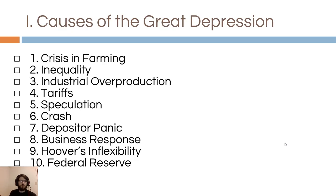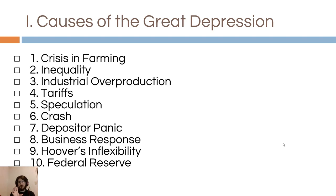The main causes of the Great Depression in Canada included a crisis in farming, inequality, industrial overproduction, tariffs that Canada put up as a result of the Great Depression following what the United States did, speculation beforehand, the stock market crash — which wasn't a direct cause but was connected — depositors panicking afterwards, businesses shutting down or holding back funds or firing workers, and in the United States, Hoover being inflexible and the Federal Reserve mismanaging monetary policy.